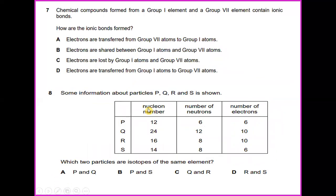A compound forms from a Group 1 element and a Group 7 element containing ionic bonds. How are the ionic bonds formed? Electrons are transferred from Group 1 atoms to Group 7 atoms. So the answer will be D.